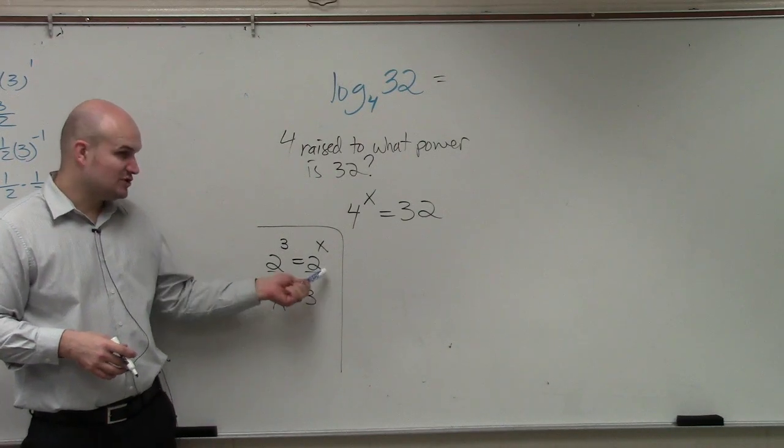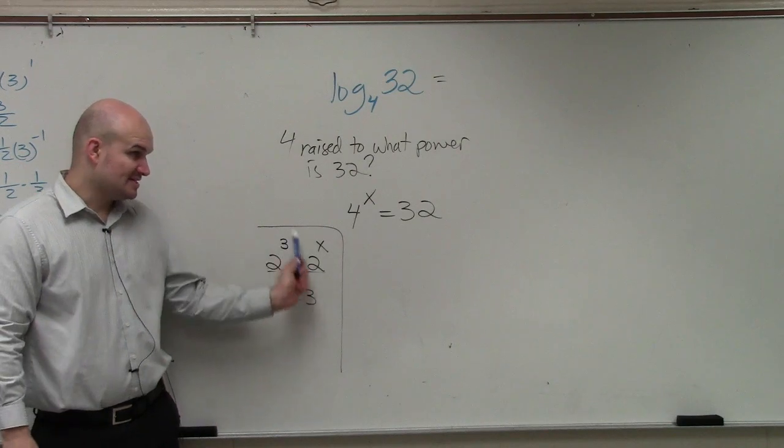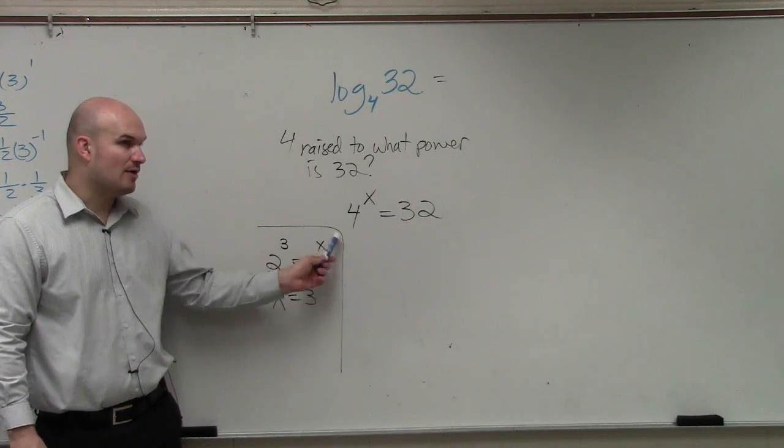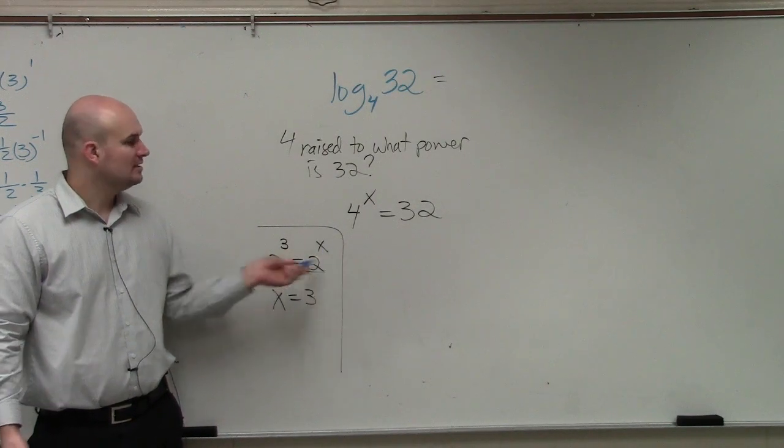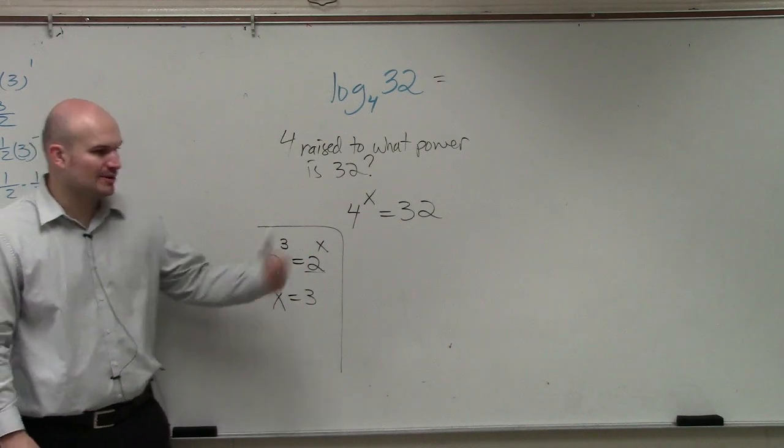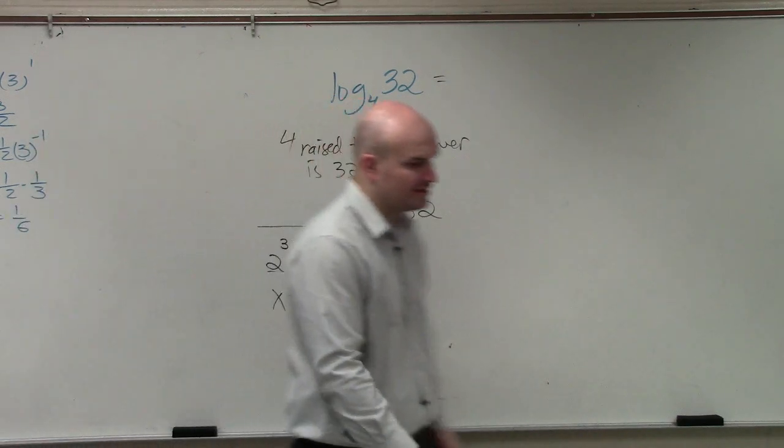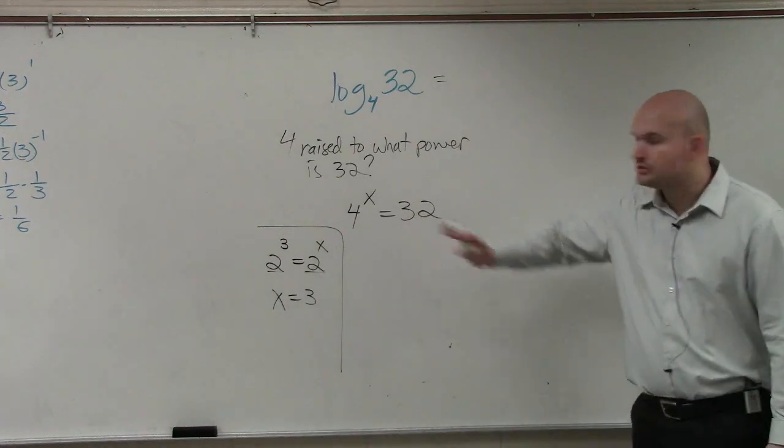Whenever you have two exponents equal to each other and their bases are exactly the same, then their powers must be exactly the same. This is what we call the one-to-one property. And I didn't teach it to you because usually we go over this later in the chapter.